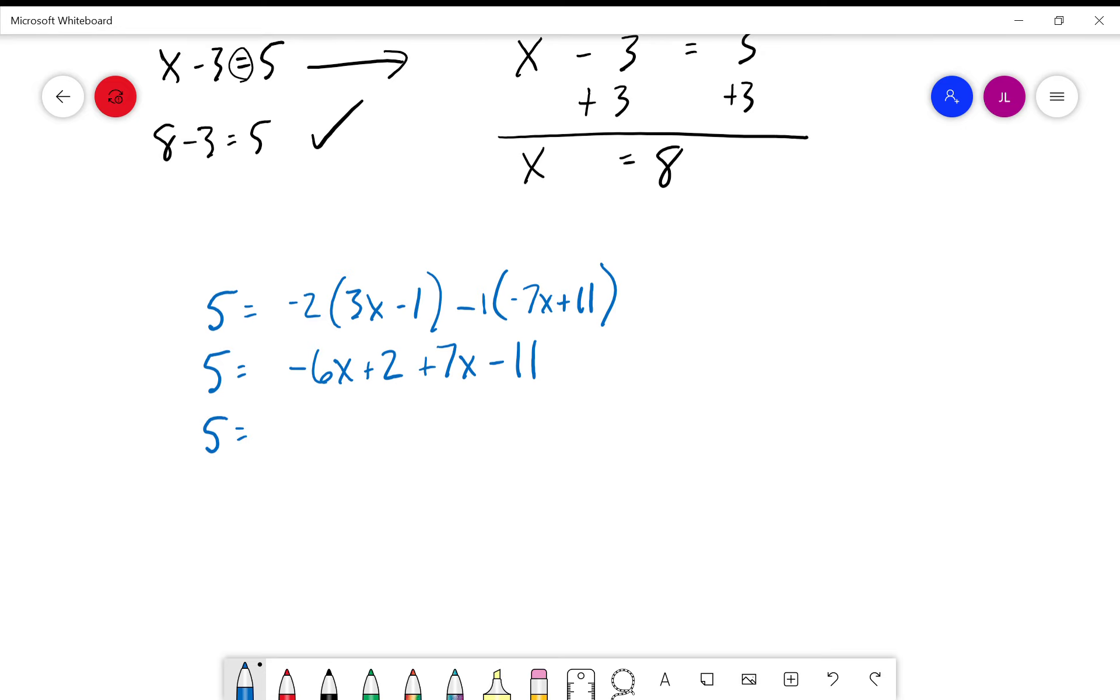So we're still going to say five is equal to, we'll combine like terms on one side. Negative six x plus seven x is one x, we can just write that as x. And we've taken care of those. Two minus eleven is negative nine. So now we're looking at a point where we have five is equal to x minus nine.